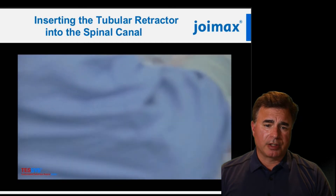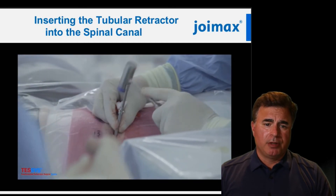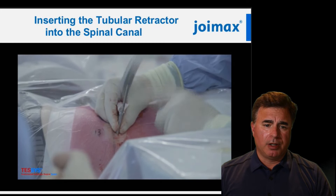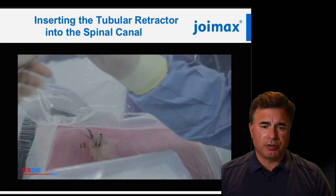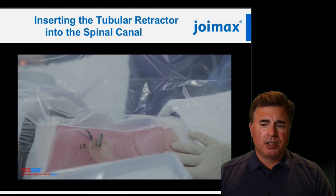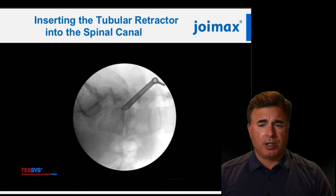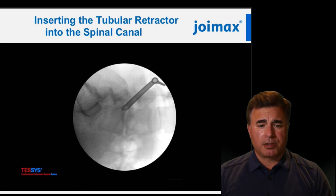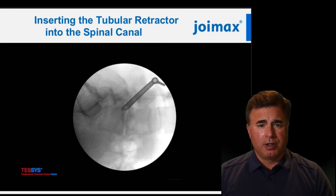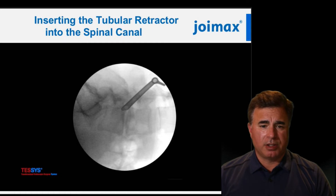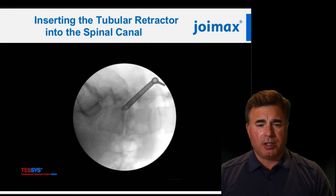The next step is inserting the tubular retractor. The tubular retractor is beveled, with the opening of the bevel in line with the handle that you use to insert it. Think of the long end of the bevel as a retractor — I insert it so that it goes underneath the dura and serves as a retractor. That way, when I get in with the endoscope, everything within the confines of the tubular retractor will be disk material and I can safely remove it. Notice on this lateral image that the opening of the bevel spans the entire disk space.